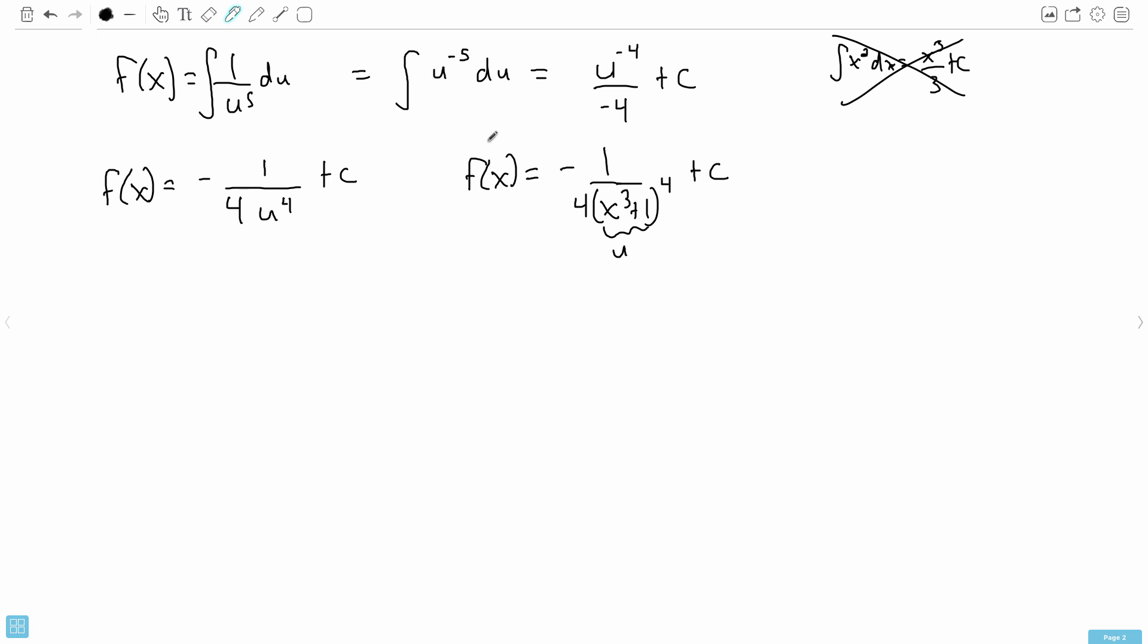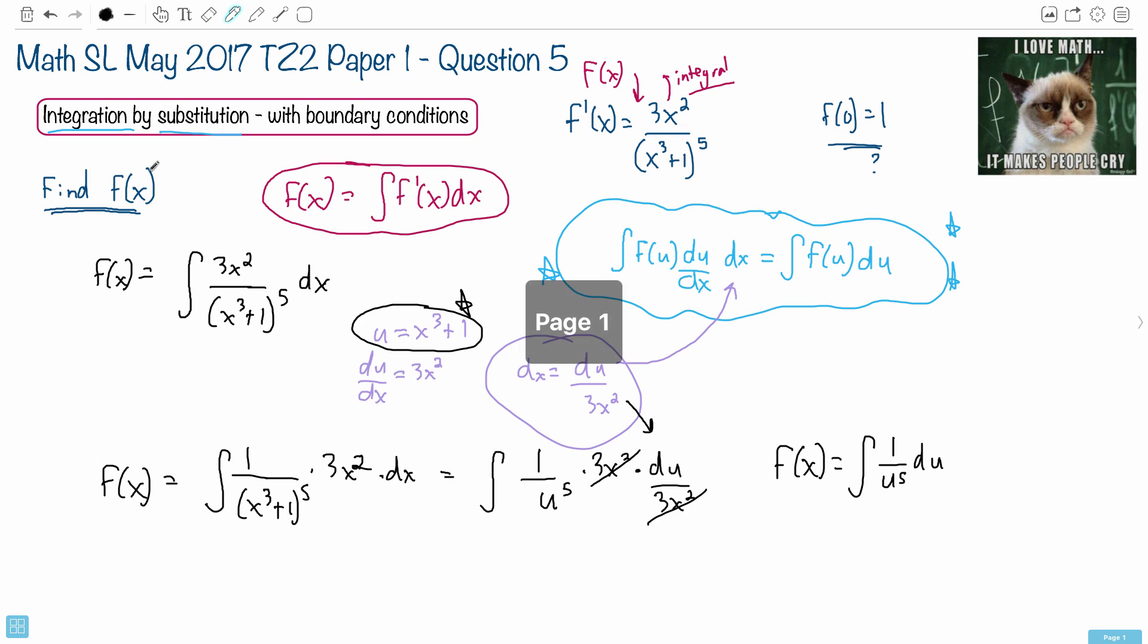And normally, we'd be done. We'd say, aha, hooray, we finished it. Because this right here was an indefinite integral. Most people think that that's what we often do. But here, they gave us boundary conditions. Now we get to use this piece of information right here. This right here now becomes important. That f of 0 equals 1.